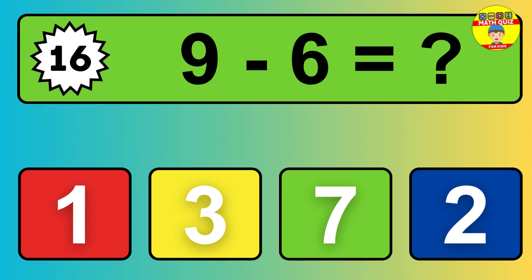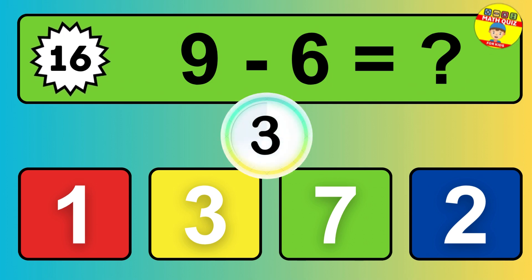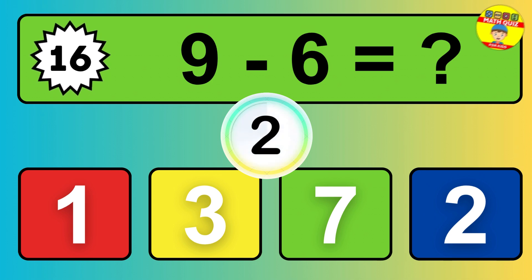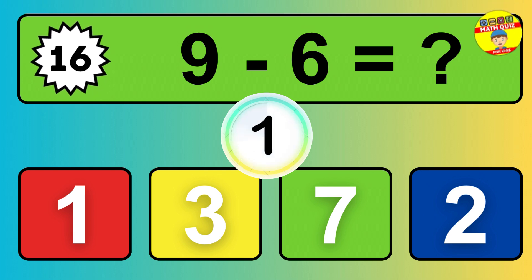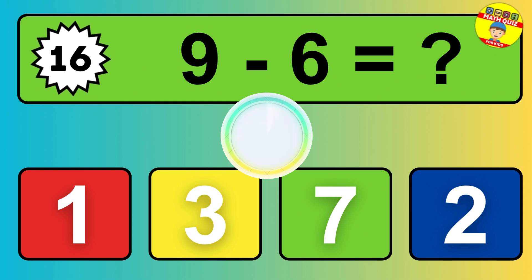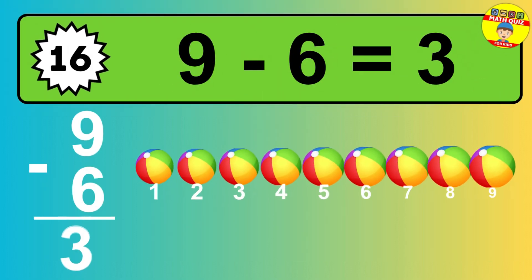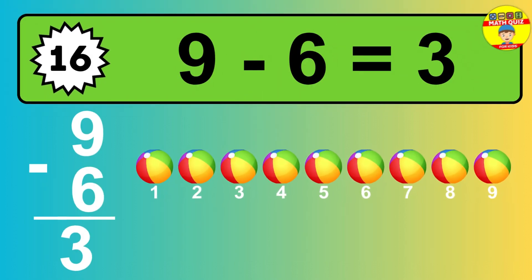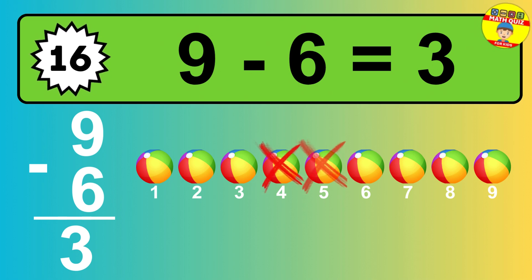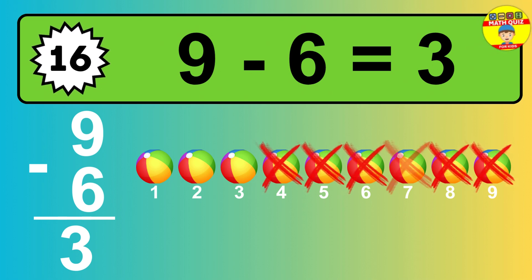Question 16: 9 minus 6 equals what? The answer is, 9 minus 6 is 3. Let's count it: 1, 2, 3.